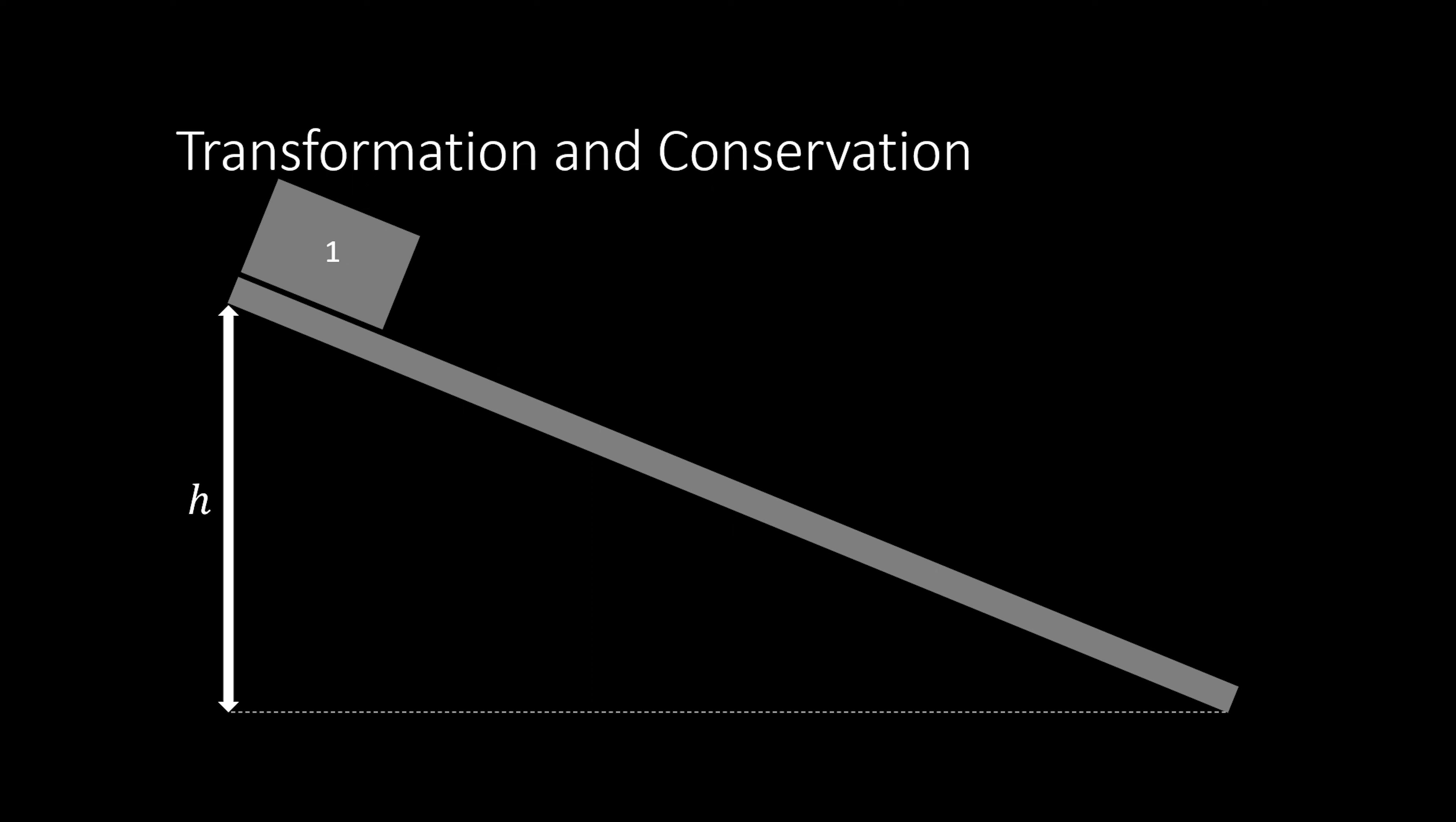But why do we care about energy? The reason why we care so much about energy is due to the conservation of energy and the transformation of energy. Transformation and conservation of energy work hand in hand. As no energy can be lost within the system, the energies acting upon the block must change. When the block is at the highest point, shown at point one, that's where we have the most potential energy and we have zero kinetic energy since the block is at rest.